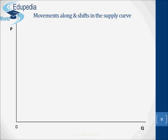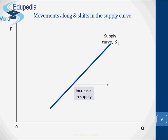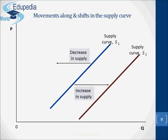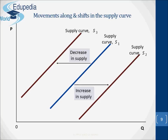Now let's talk about the movements along and shifts in the supply curve. The principle here is the same as with the demand curve. The effect of a change in price is illustrated by a movement along the supply curve. For example, from point D to point E in the last figure, when prices rise from 80 to 100, quantity supplied rises from 530,000 to 700,000 tons per month. If any other determinant of supply changes, the whole supply curve will shift. A rightward shift illustrates an increase in supply; a leftward shift illustrates a decrease in supply.